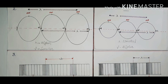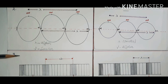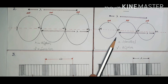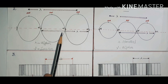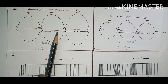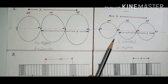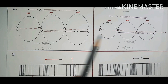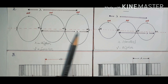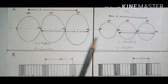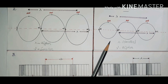This frequency-wavelength relationship can be understood more clearly by looking at examples of stationary and longitudinal waves as well. As you go from a wave of smaller wavelength to a wave of larger wavelength, the frequency goes on decreasing.